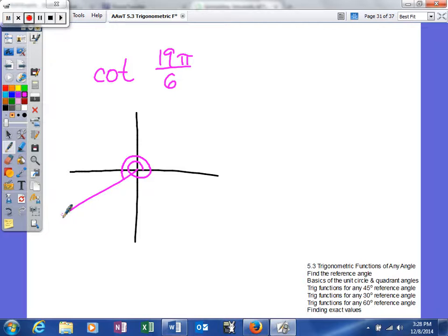It's easy to find our reference angle when our angle's in radians, as long as our denominator is 3, 4, or 6. So since our denominator is 6, it's just π over your denominator. Or you should be able to tell that we are at 18/6 here. So we have 1 more sixth to go. So this angle is going to be π/6.